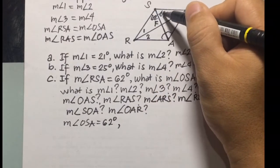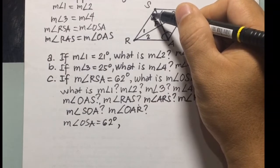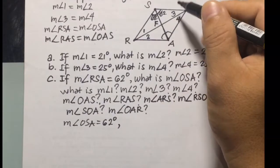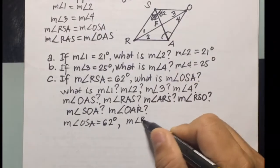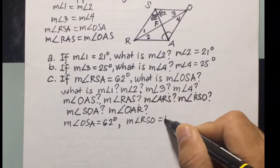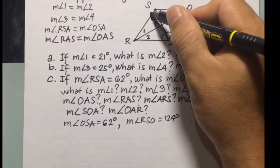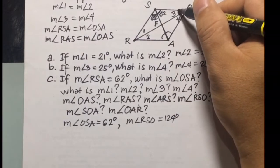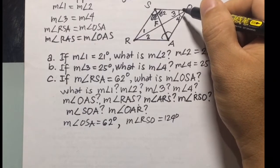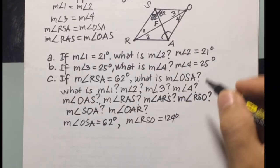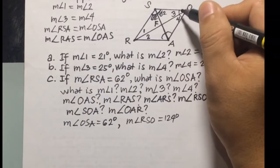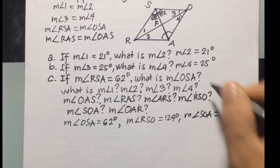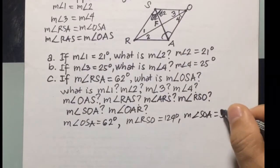If we add the two parts together: 62 plus 62 equals 124 degrees. So the full measure of angle S is 124 degrees. Since it is a consecutive angle, angle O equals 180 minus 124. So the measure of angle SOA is 180 minus 124, which equals 56 degrees.